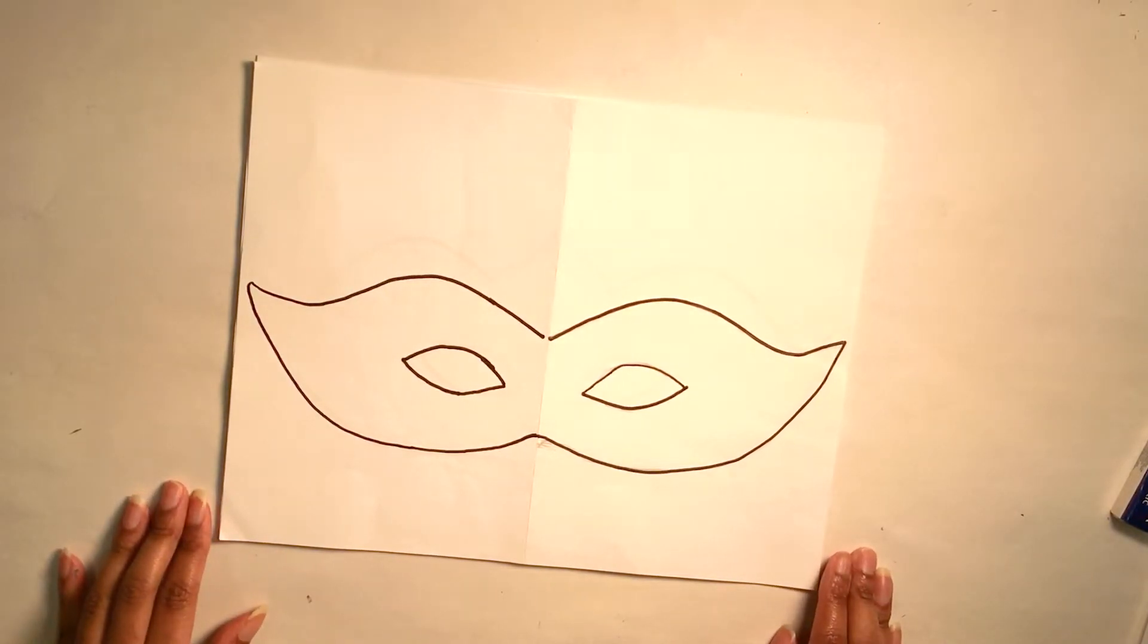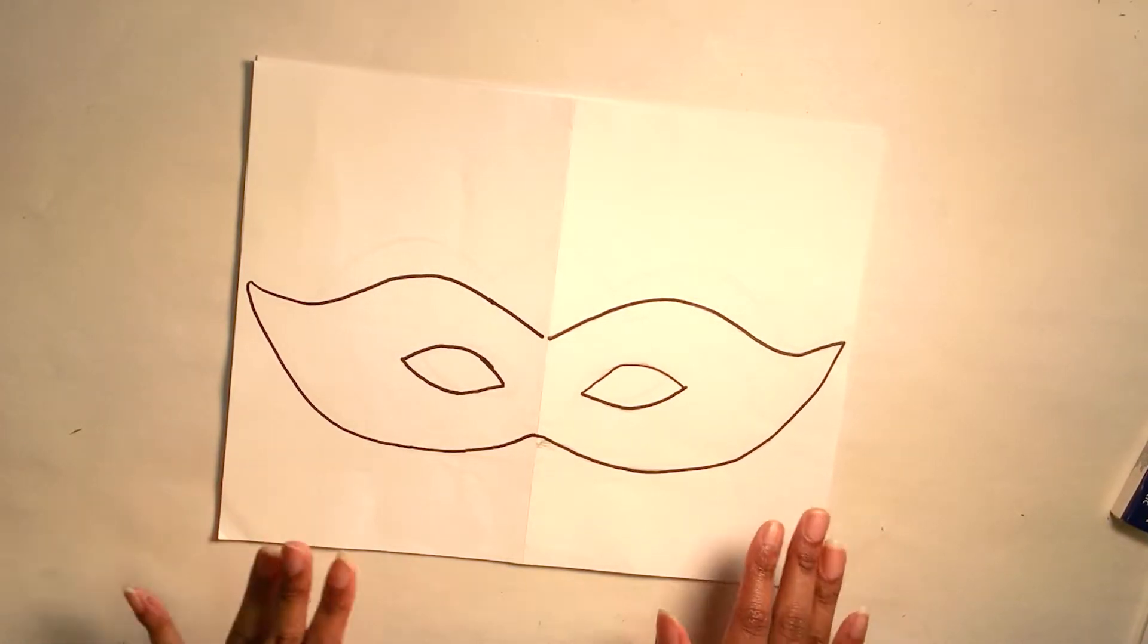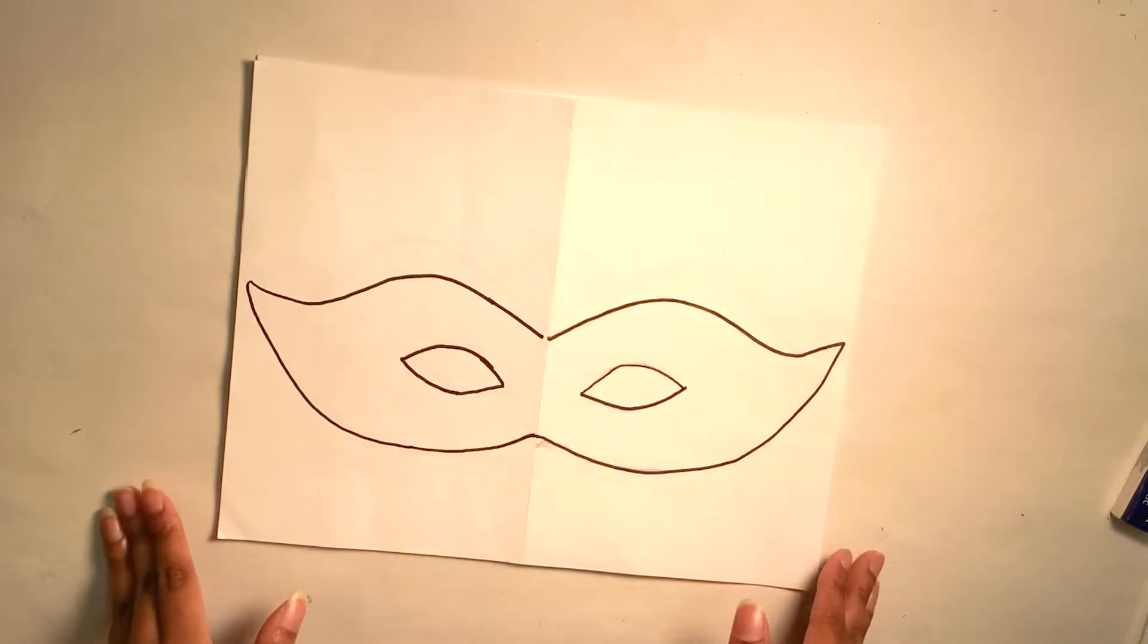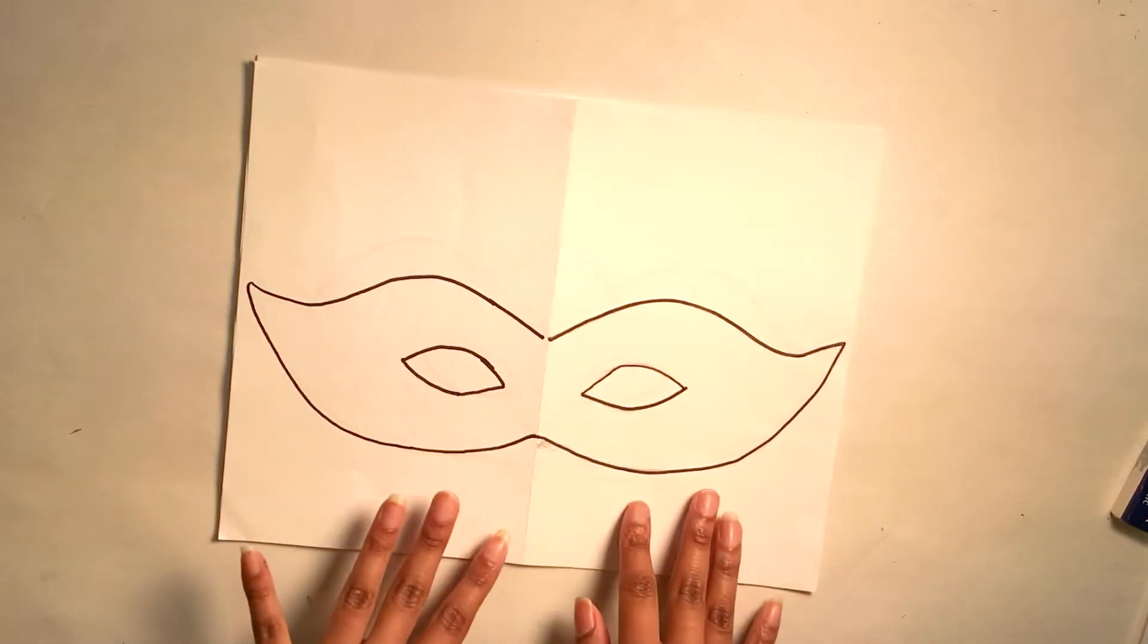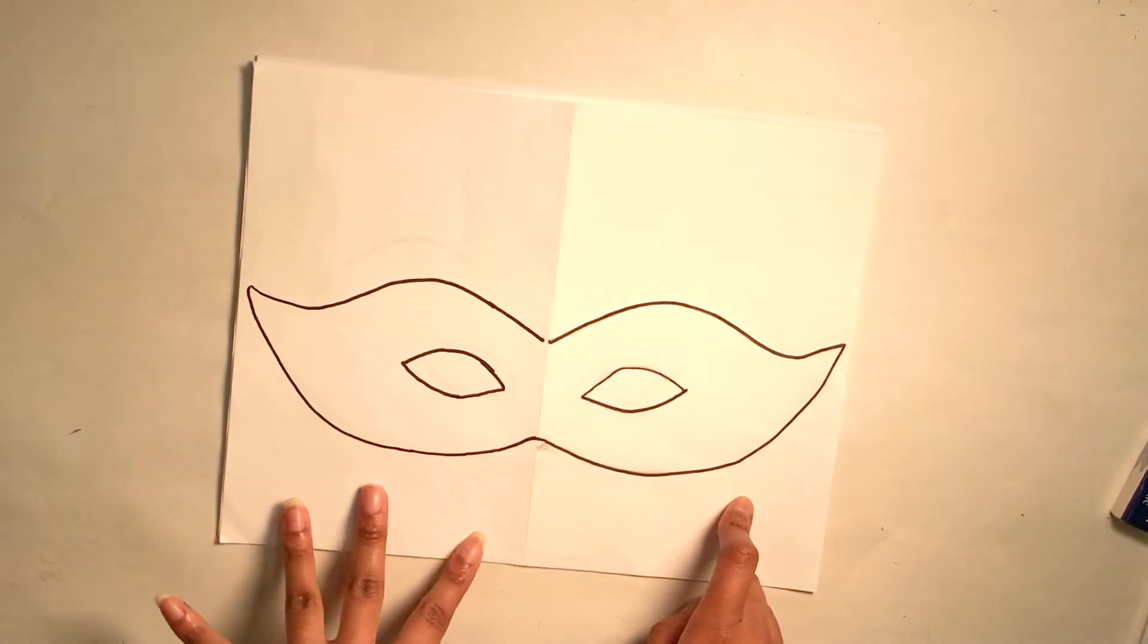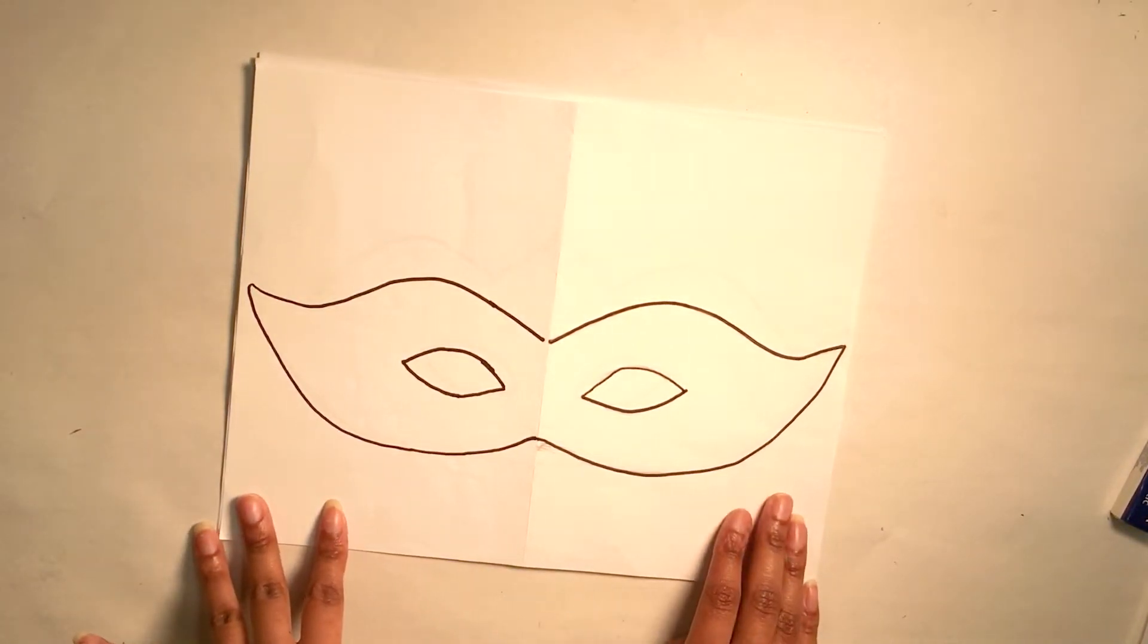First we're going to pick out a base. I recommend that you look some up because there's so many different kinds of masks. Your masks don't have to look like any of the ones I'm about to show. For example, the masks that I'm showing you are just half masks which just cover the eyes. It's not a full mask that covers the entire face.